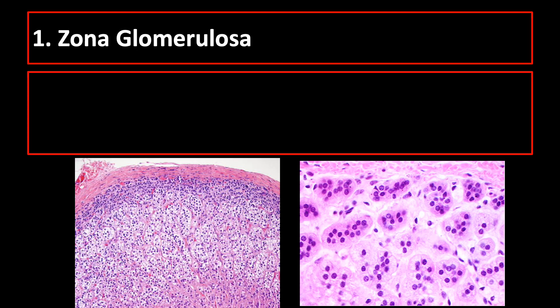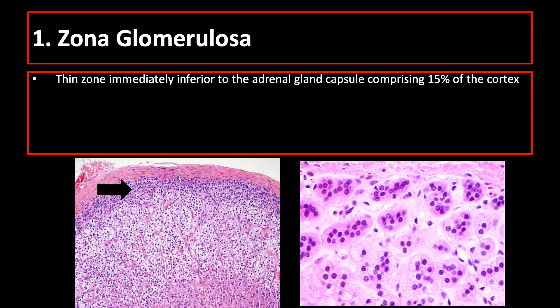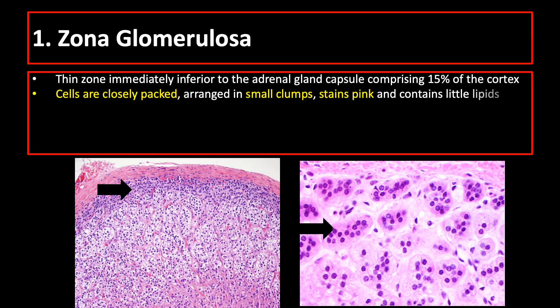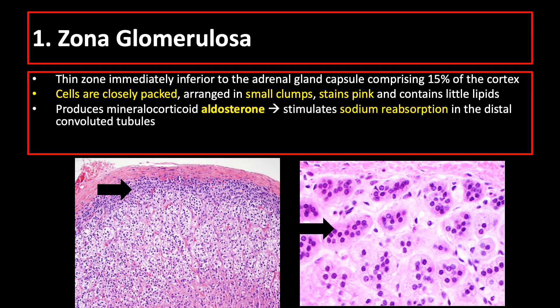The zona glomerulosa is immediately inside the capsule and comprises about 15% of the cortex. It consists of cells closely packed, arranged in small clumps, stains pink, and contains little lipids. The zona glomerulosa produces the mineralocorticoid aldosterone, which stimulates sodium reabsorption in the distal convoluted tubules of the kidneys.